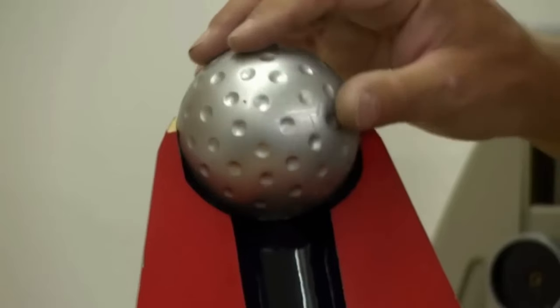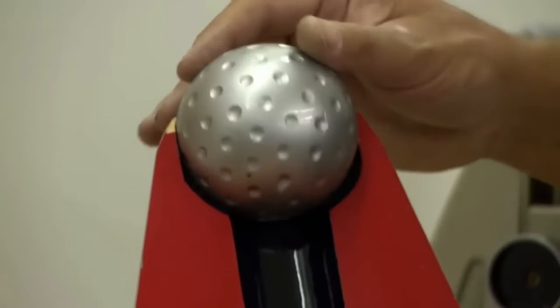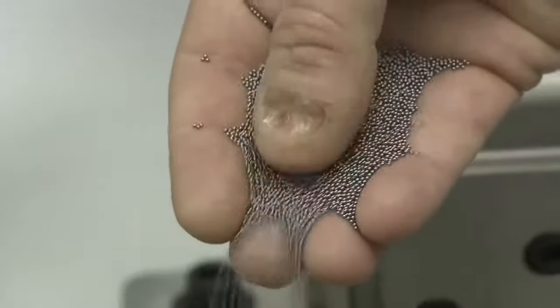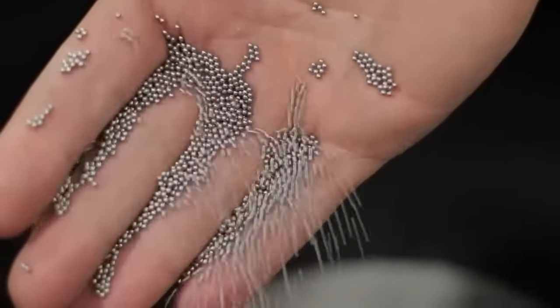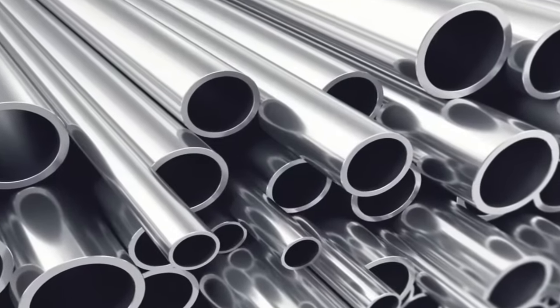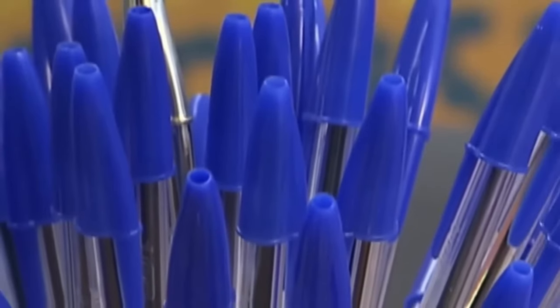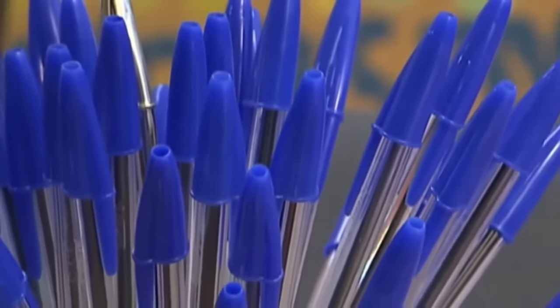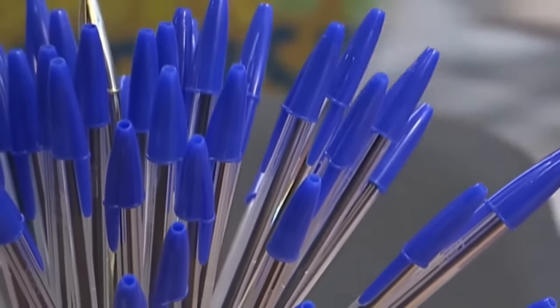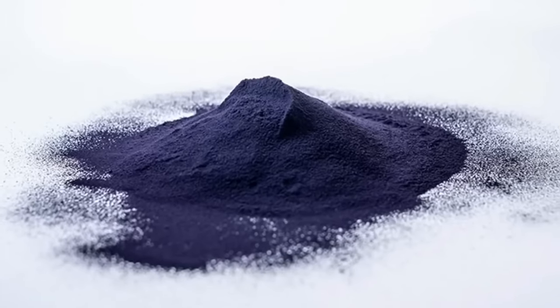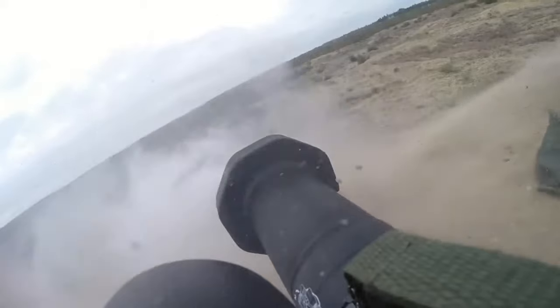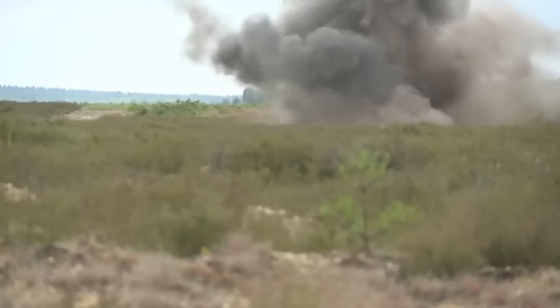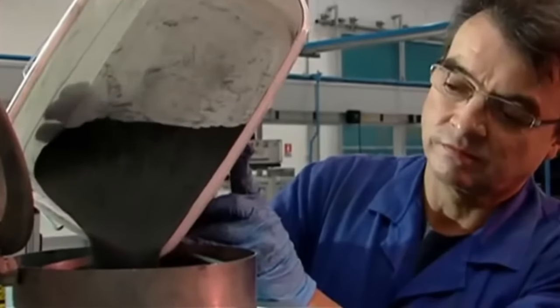The manufacturing process of Bic pens starts with the ball. These balls are only one millimeter in diameter and are made from tungsten carbide, an incredibly resilient material ten times stronger than steel. In theory, these pens should last a lifetime, but when the ink runs out, they're discarded. This material is so tough that it's used to make anti-armor ammunition in the military industry.